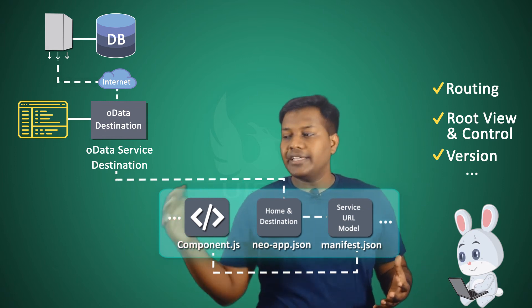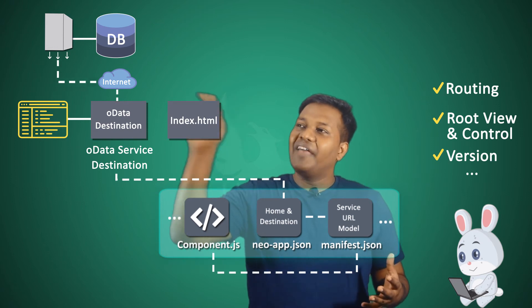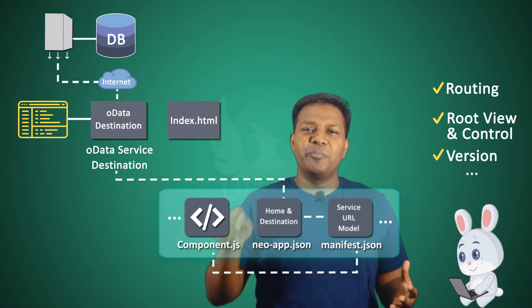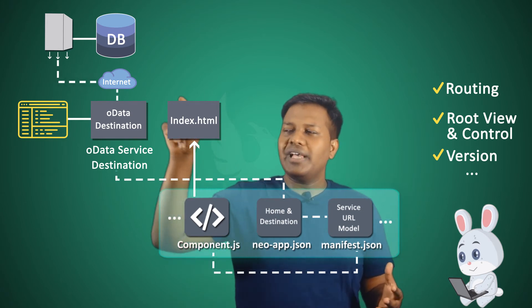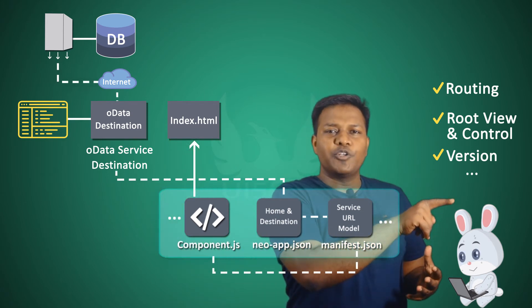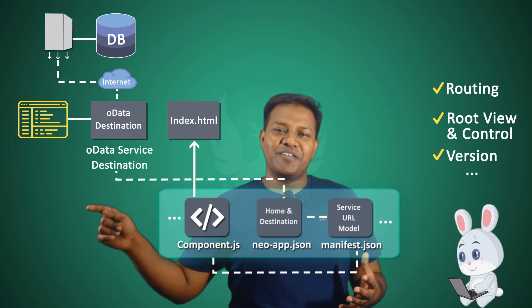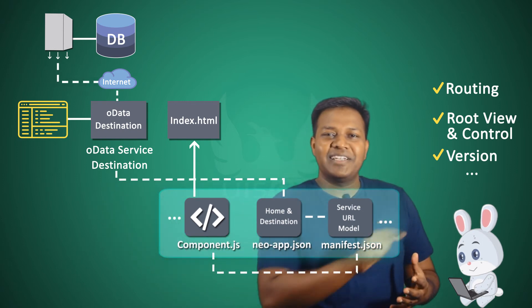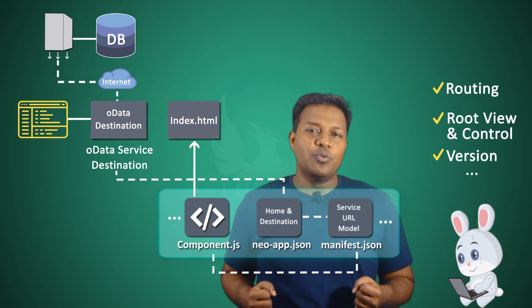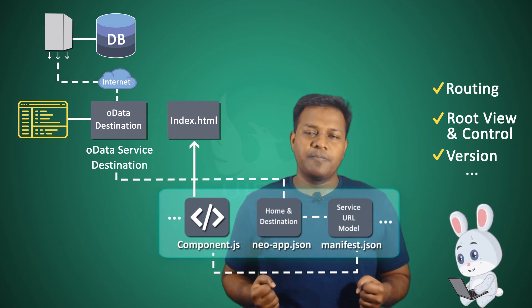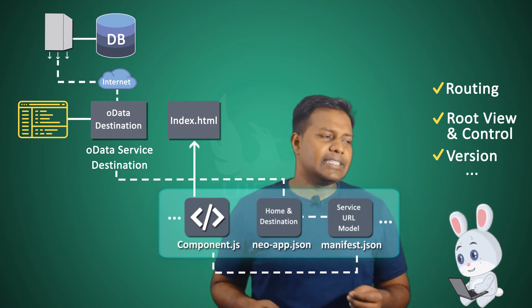All the definitions from manifest.json should be imported in component.js — that's how the modern-day UI5 application works. Your index page calls component.js, which then goes to manifest.json, then to neoapp.json, and then to the server settings. Everything comes back to the index page, which is what is served to the user using the application. This is the entire flow of the application, which we will be seeing in detail.